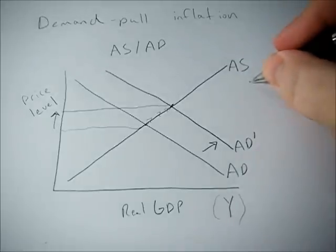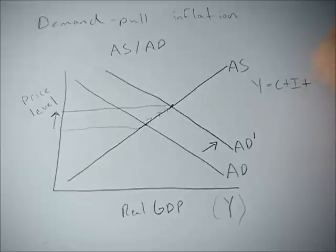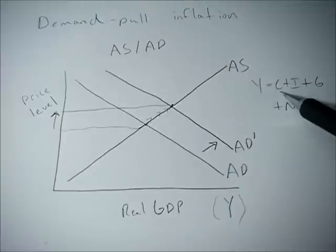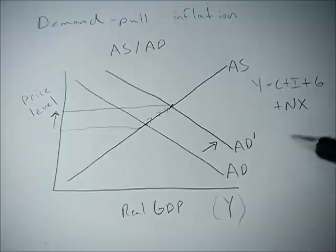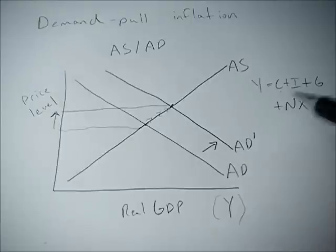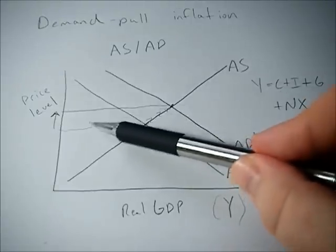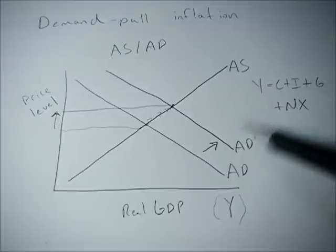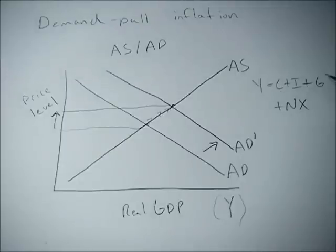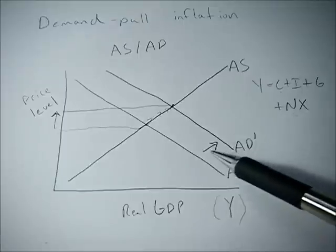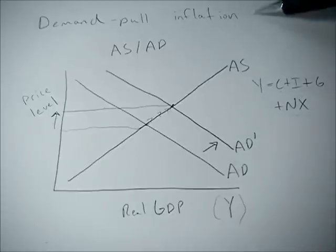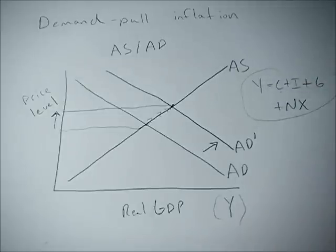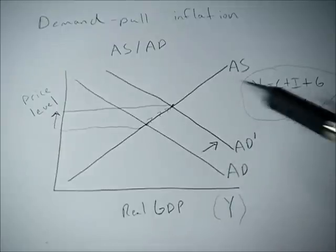What can cause the aggregate demand curve to shift? Remember the equation for real GDP. Any change in C (consumption spending) — such as rising income or more positive expectations about the future — will shift aggregate demand and put upward pressure on price levels. The same applies to investment: if investment goes up, it can shift AD and cause demand-pull inflation. G (government spending) and net exports also matter — if exports go up or imports go down, we see this aggregate demand shift and demand-pull inflation occurring.